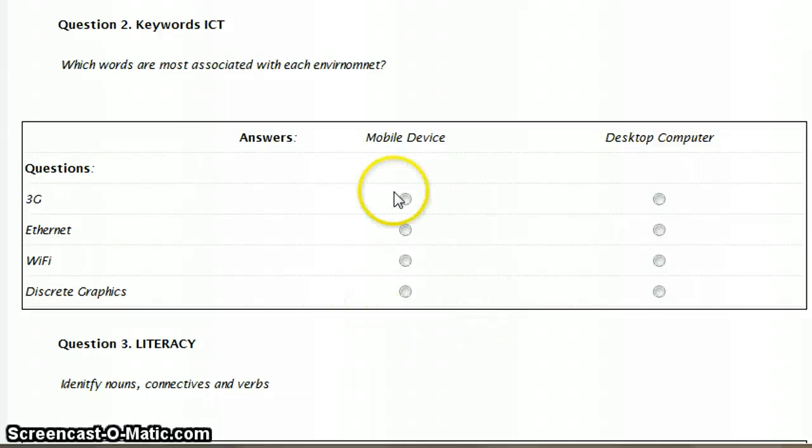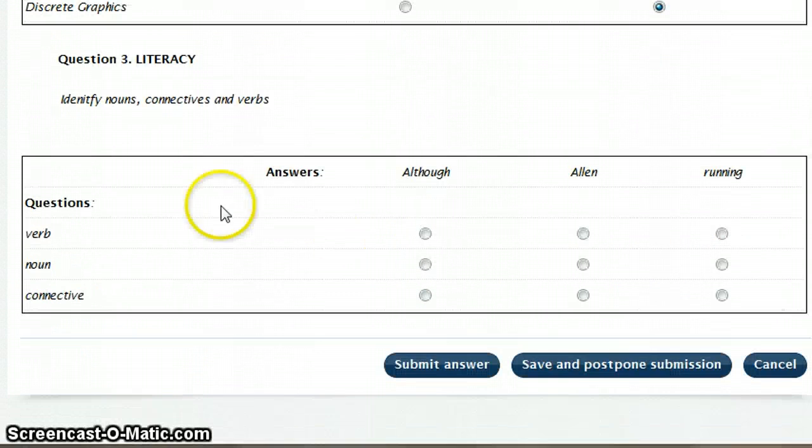And then I've got ICT keywords: 3G, Ethernet, Wi-Fi, discrete graphics, like so.